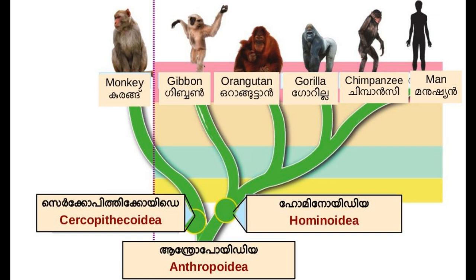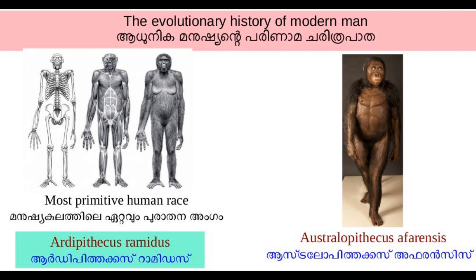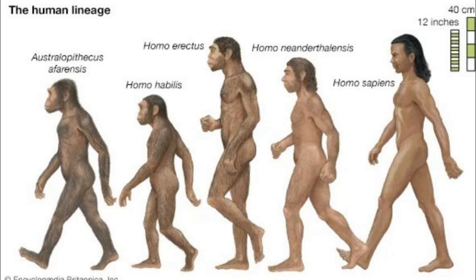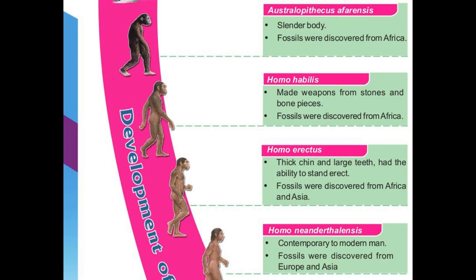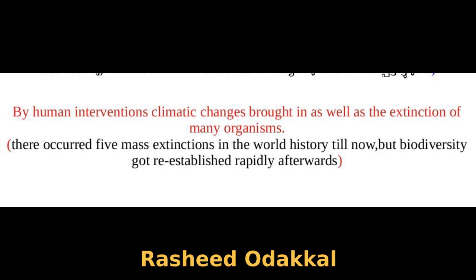Based on the fossils available to us, the oldest member of the human race is believed to be Ardipithecus ramidus, which is believed to have originated in Africa. Later, the Australopithecus appeared. The first member of the genus Homo is believed to be Homo habilis, who made weapons from stones and bone pieces. Homo erectus had the ability to stand erect with a thick chin and long teeth, and their fossils have been found not only in Africa but also in Asia. Homo neanderthalensis were contemporary to modern man, that is Homo sapiens. Due to various human interventions, climatic changes brought about the extinction of organisms occurred so far.